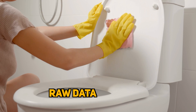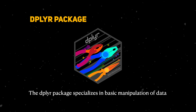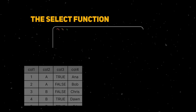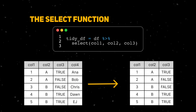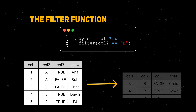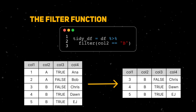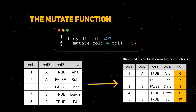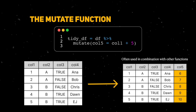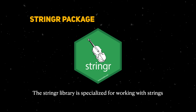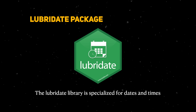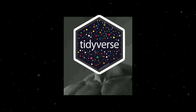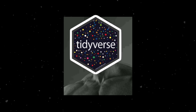It's rare that raw data is immediately usable after loading — we usually have to clean it ourselves. The dplyr package supplies many of the functions needed for cleaning data. Key ones to know: the select function lets us choose columns to keep in an analysis; the filter function lets us choose what rows to keep based on conditions we specify; and the mutate function lets us create new columns. We often combine mutate with functions from other tidyverse libraries — the stringr library specializes in text data, lubridate is designed for date and time data, and the forcats library is specifically for factor data.